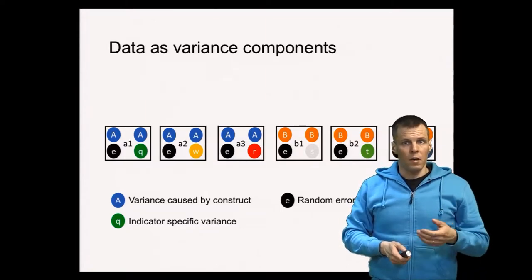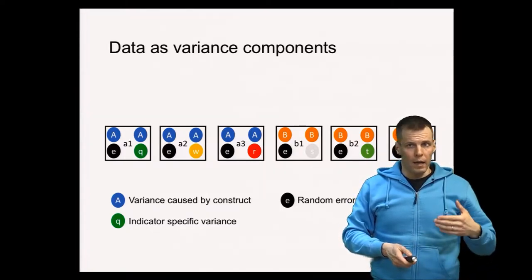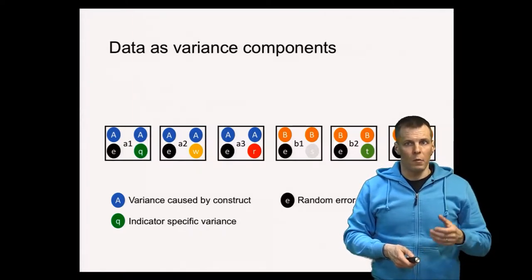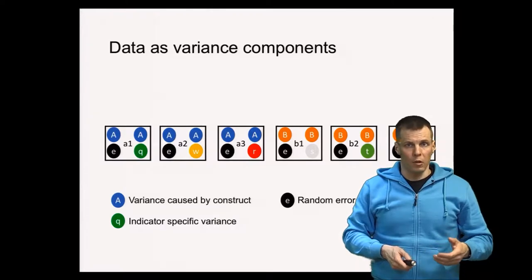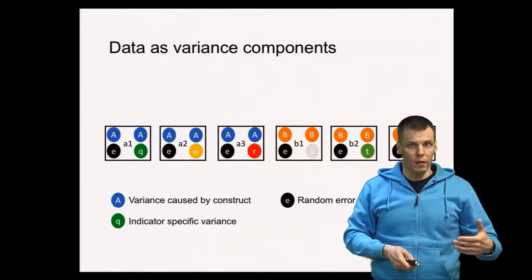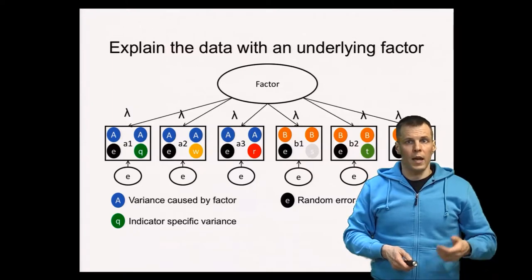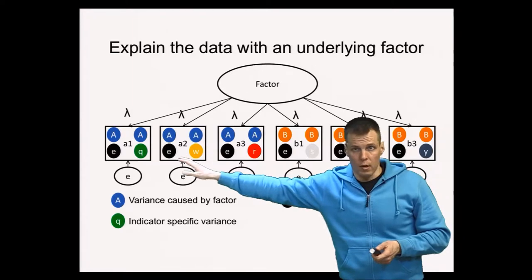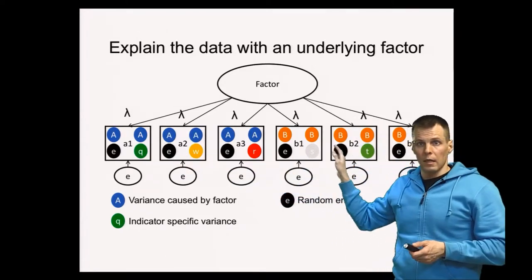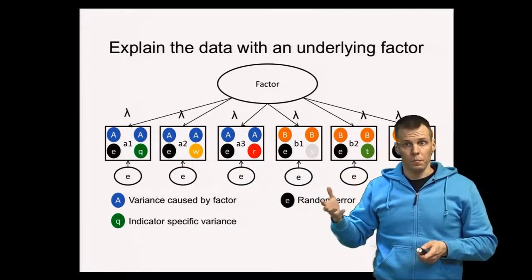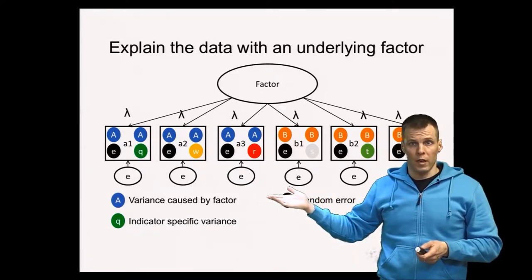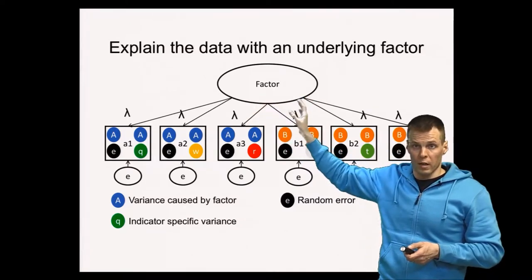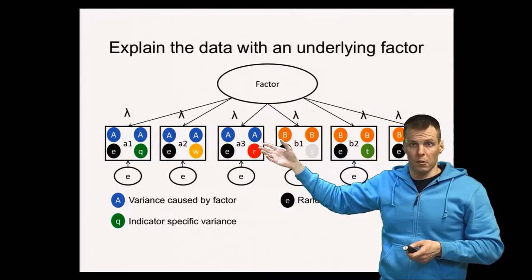In factor analysis we add one or more latent variables to this model. So these are observed variables, and we try to explain the correlation between the observed variables by using a smaller number of latent variables. For example, we add one factor here that we think explains the intercorrelations between these items. There are two strategies: exploratory factor analysis, where we allow the computer to specify the factors, and confirmatory analysis, where we specify the factor structure ourselves.